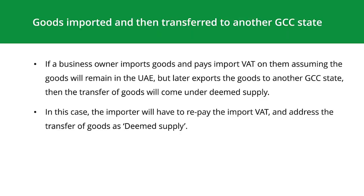Goods imported into the UAE and then transferred to another GCC state: if a business owner imports goods and pays import VAT on them, assuming the goods will remain in the UAE, but later exports the goods to another GCC state, then the transfer of goods will come under deemed supply. In this case, the importer will have to repay the import VAT and address the transfer of goods as deemed supply.